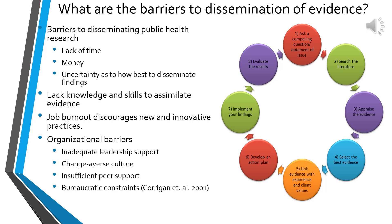Evidence-based public health is the process of systematically finding, appraising, and using clinical and community research findings as the basis for decisions. According to McVeigh et al., barriers to dissemination can include organizational factors such as lack of time, money, and academic incentive, as well as individual factors such as uncertainty about how best to disseminate findings. Additional barriers include lack of basic knowledge and skills, job burnout, inadequate leadership support, a change-averse culture, insufficient collegial support, and bureaucratic constraints.